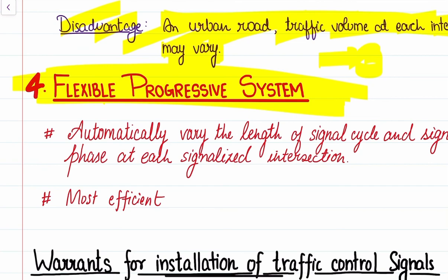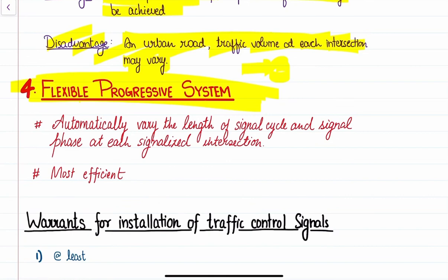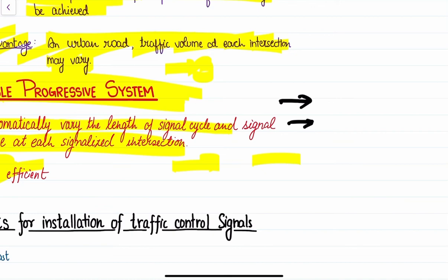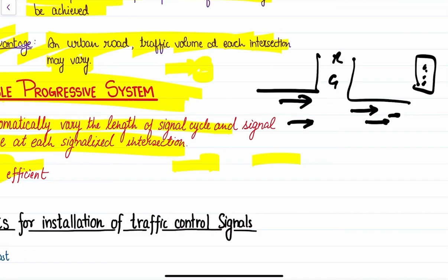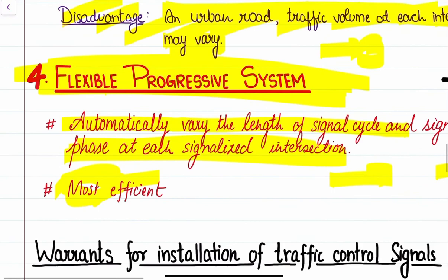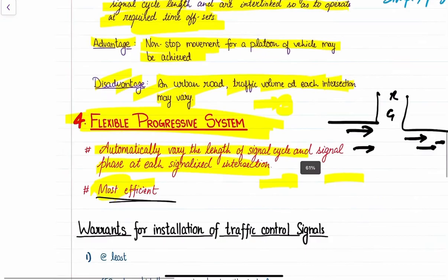Next we have the flexible progressive traffic signal system. It works on an automatic principle — sensors detect the amount of vehicles traveling on the road, and this automation varies the length of synchronous cycles and phases at each intersection, making them more efficient. Based upon the traffic moving through the intersection, the red time and green time varies, and the cycle length adjusts itself. This is the most efficient way of managing traffic.